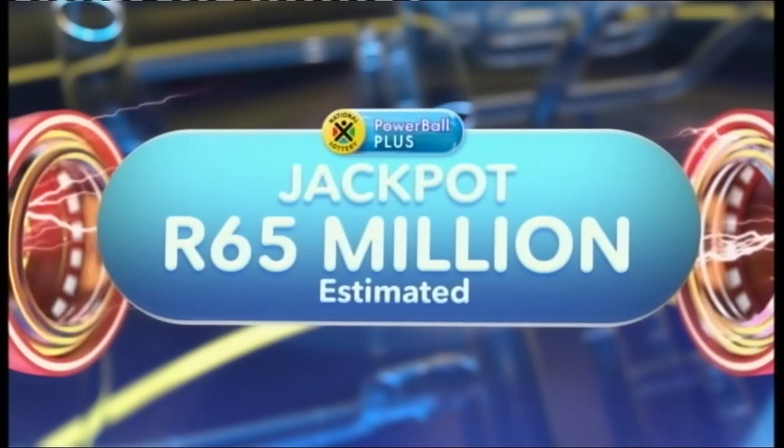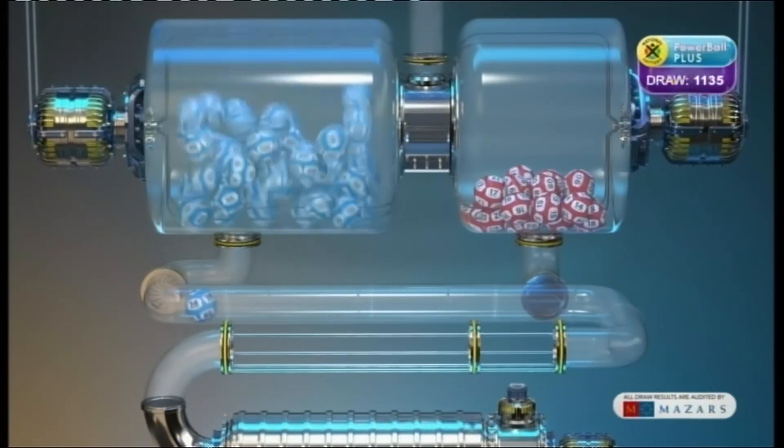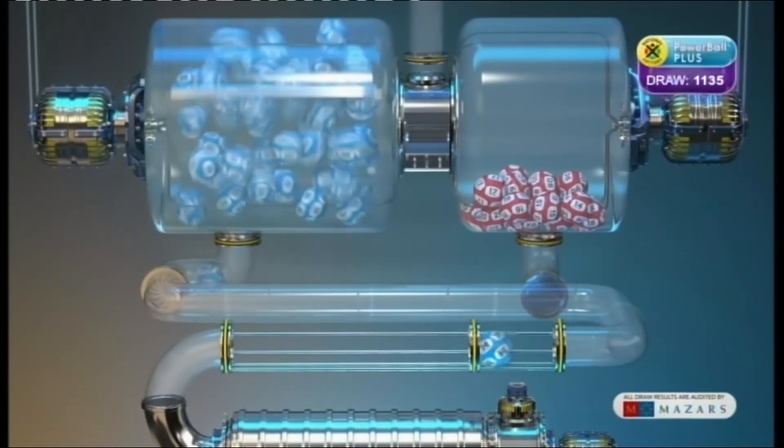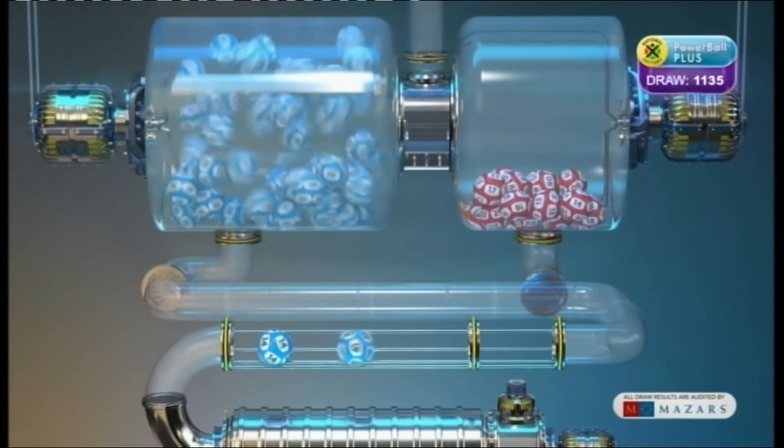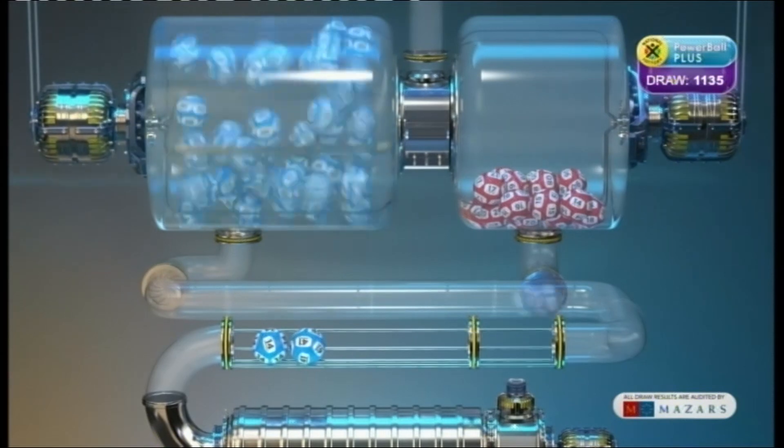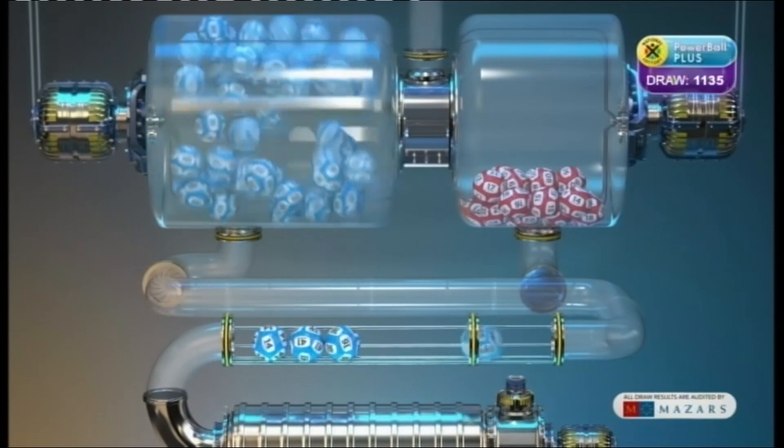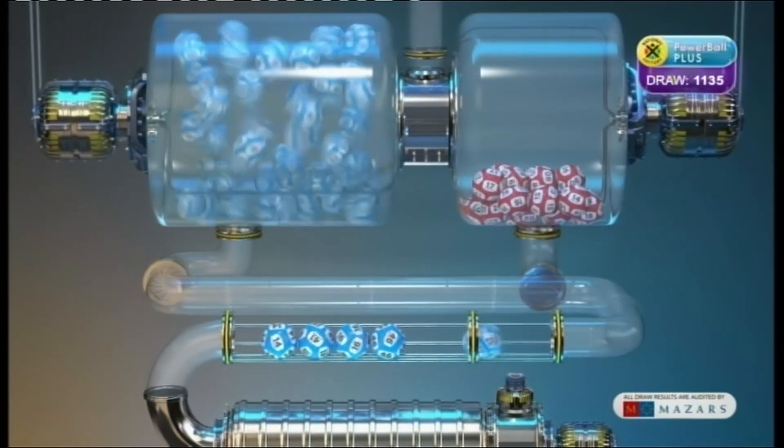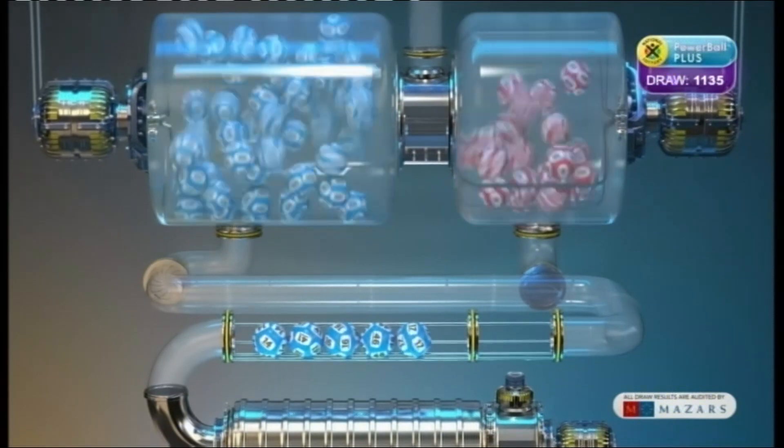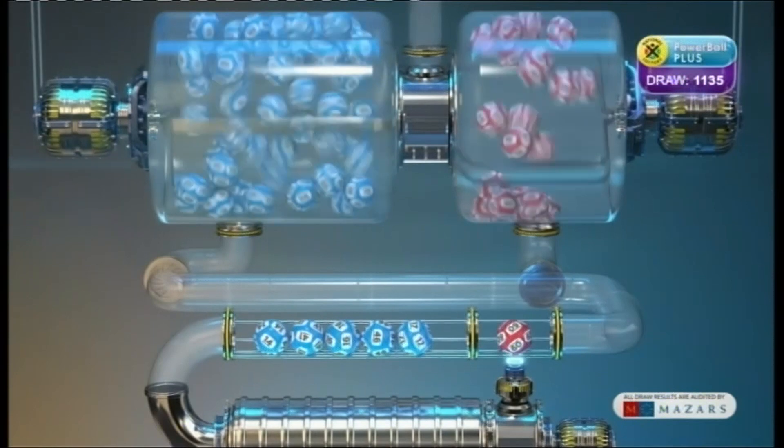Here are the Powerball plus numbers. 14, 41, 16, 46, 17, and the Powerball is 9.